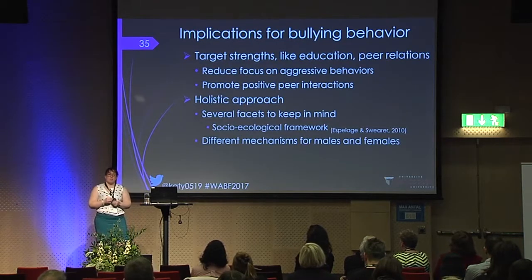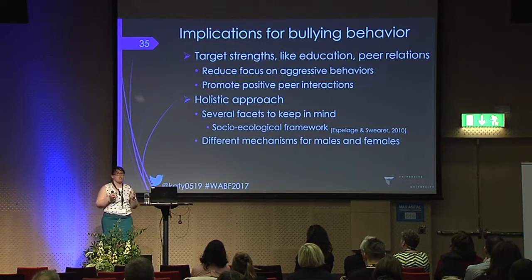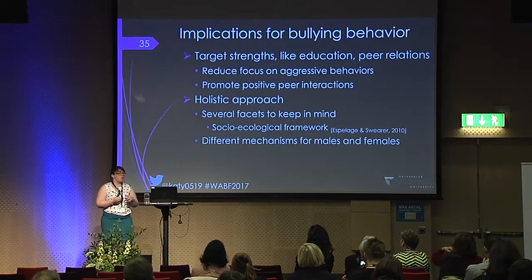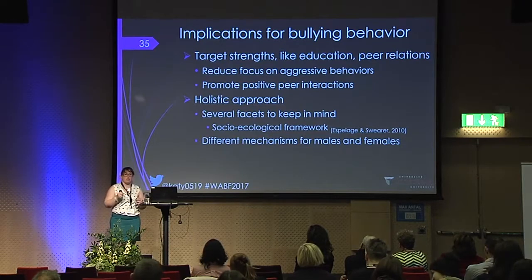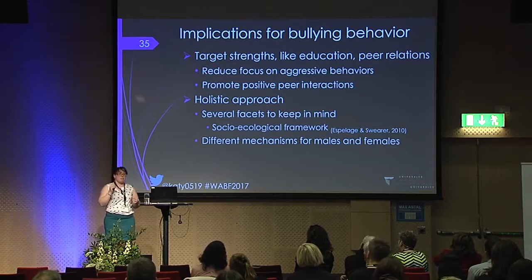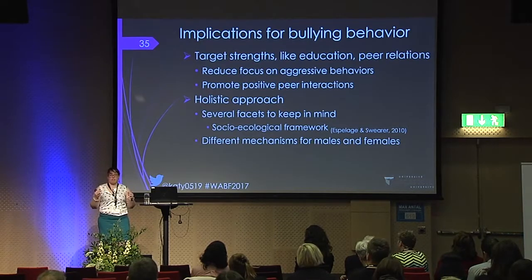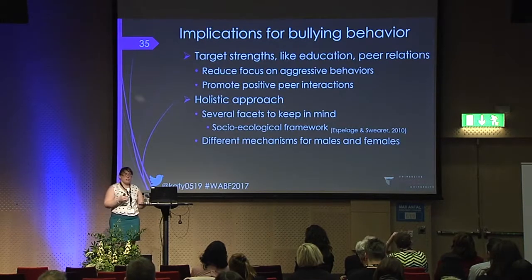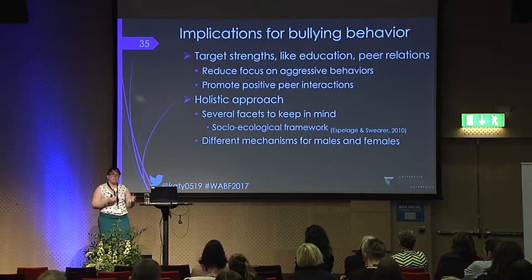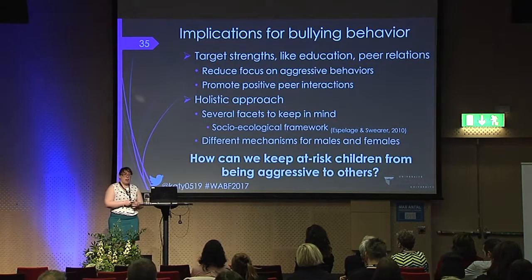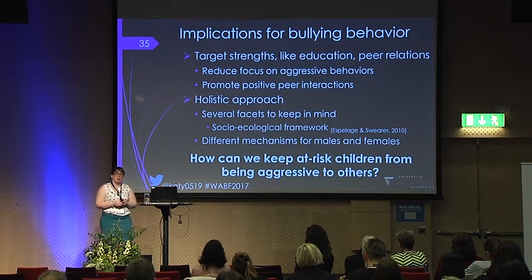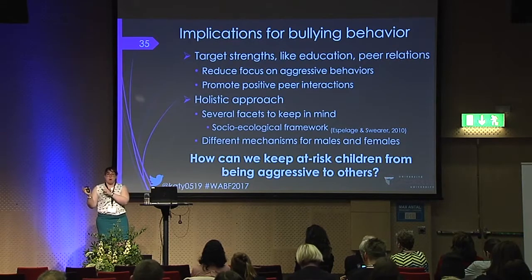In terms of implications for bullying behaviour, one of the things coming across strongly at this conference is that we need to target strengths like education, peer relations, and reduce the focus on aggressive behaviours and punitive measures. We need to promote positive peer interactions, and as researchers we need to think of this from a more holistic approach — this is a multi-faceted problem. We also need to understand that there appear to be different mechanisms for both males and females. How can we keep at-risk children from being aggressive to others presently, but also as they grow up to become adults?